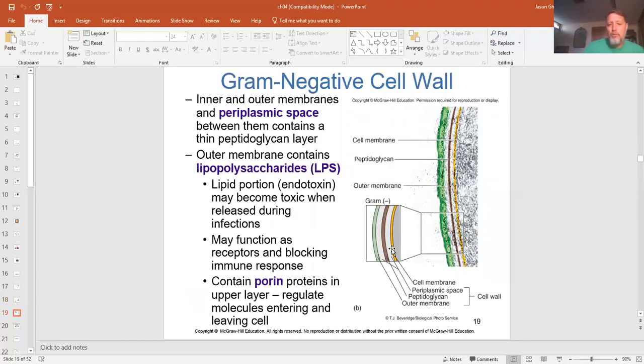Now on a gram negative cell wall, again, the brown is the cell wall. The yellow is the plasma membrane, but they've got this green color coded one that's called the outer membrane. It's a little bit different of a membrane. So they end up with two periplasmic spaces, one on each side of the cell wall because between the cell wall and the membrane, the extra membrane really helps them protect themselves.